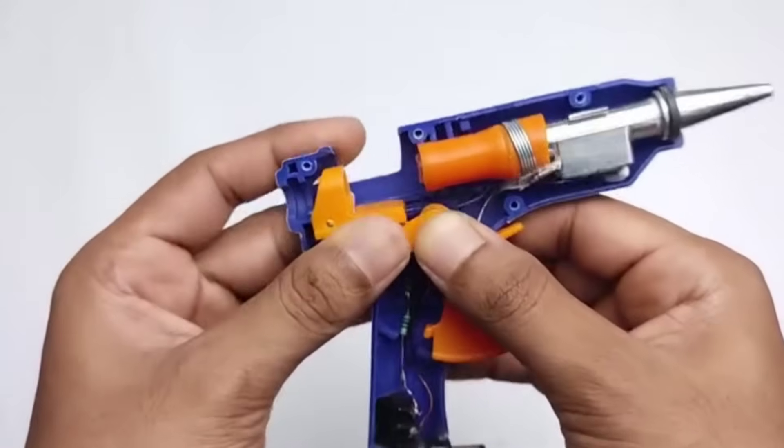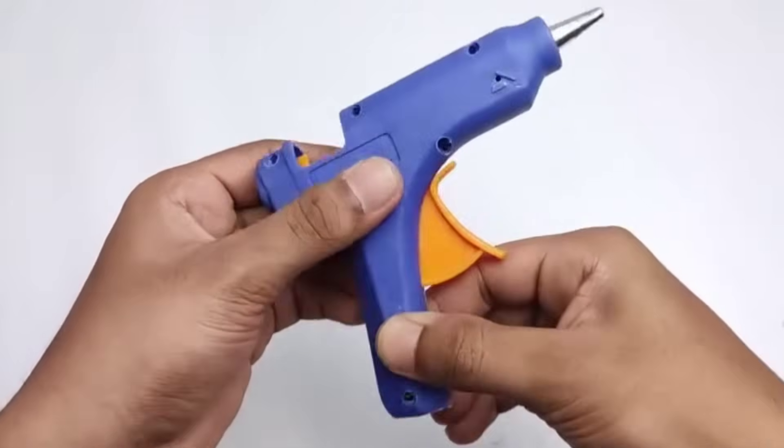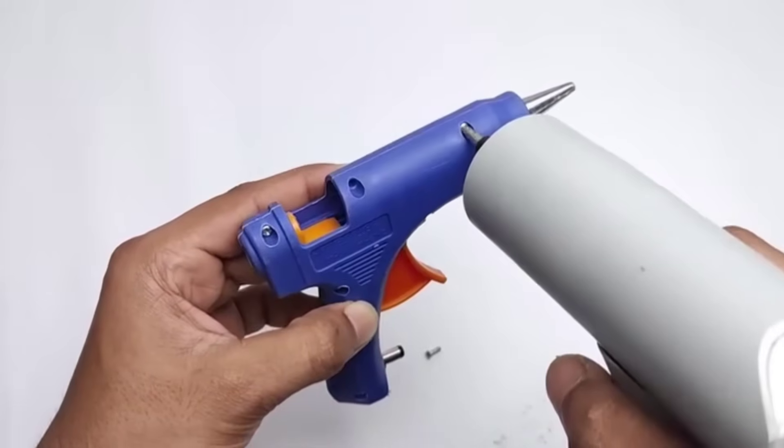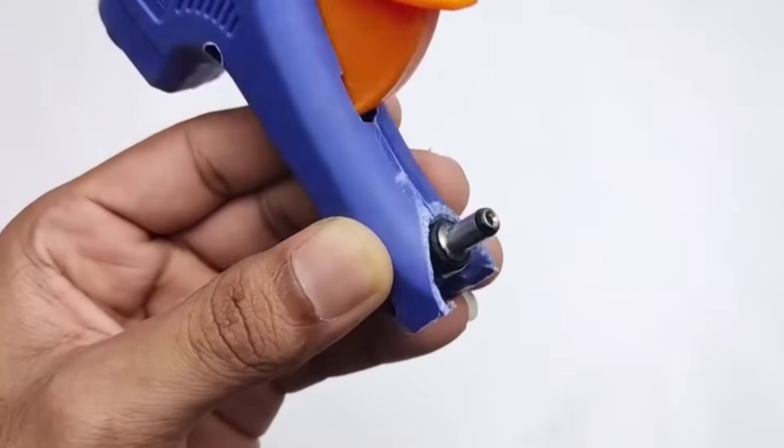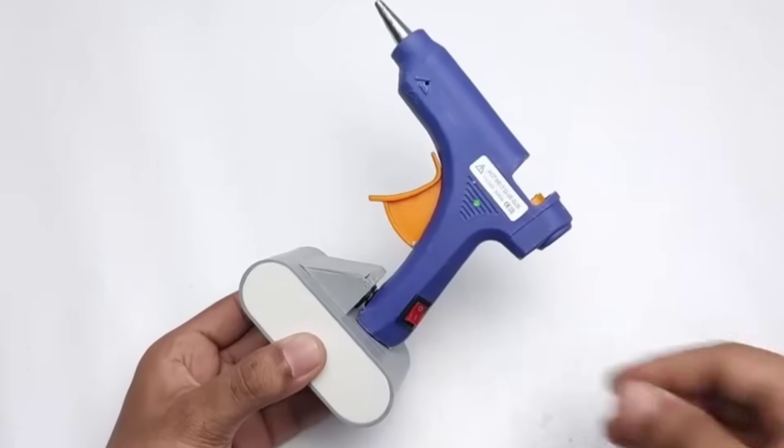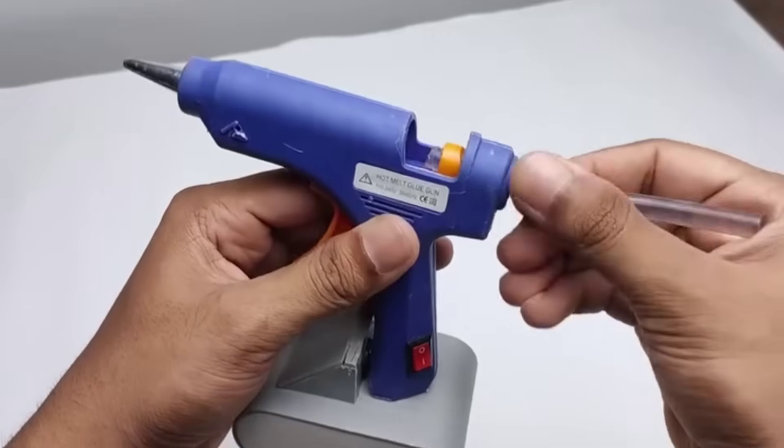After this, we install the other switch, securing it firmly in its designated position. Using a screwdriver, we make sure it's properly fixed so the glue gun can be safely turned on and off without any loose parts. Now, we're connecting a 12-volt battery to the setup. When we turn the switch on, you can see the LED light glowing, indicating that the circuit is working perfectly.